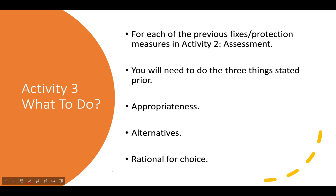For each of the previous fixes or protection measures in activity 2, you will need to do these three things. You need to think about the appropriateness — how appropriate is what you've said, is it going to work, how is it going to work, why is it going to work? The alternatives — what could have been done instead, for example instead of installing antivirus on every single PC, what else could you have done? And the rationale — why was your chosen protection measure better than the alternatives?